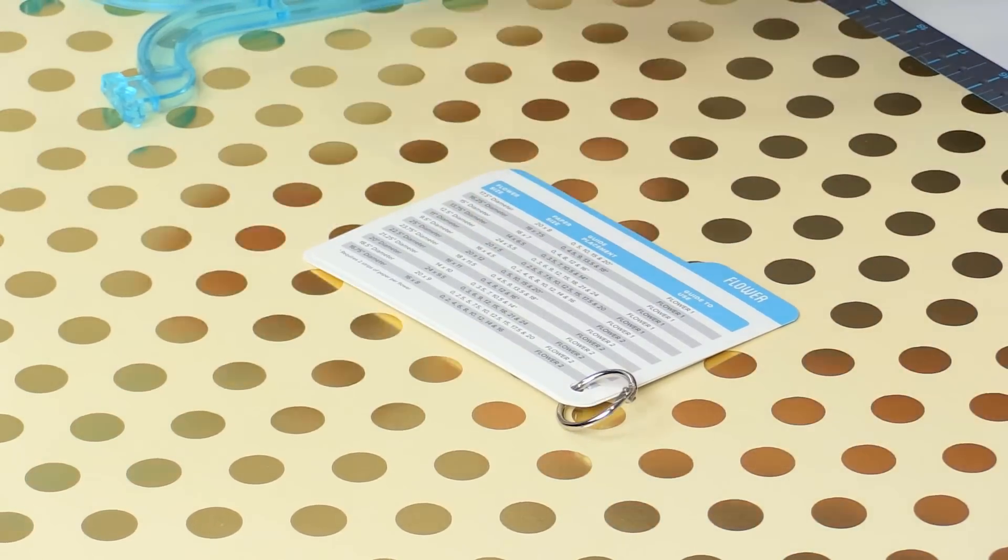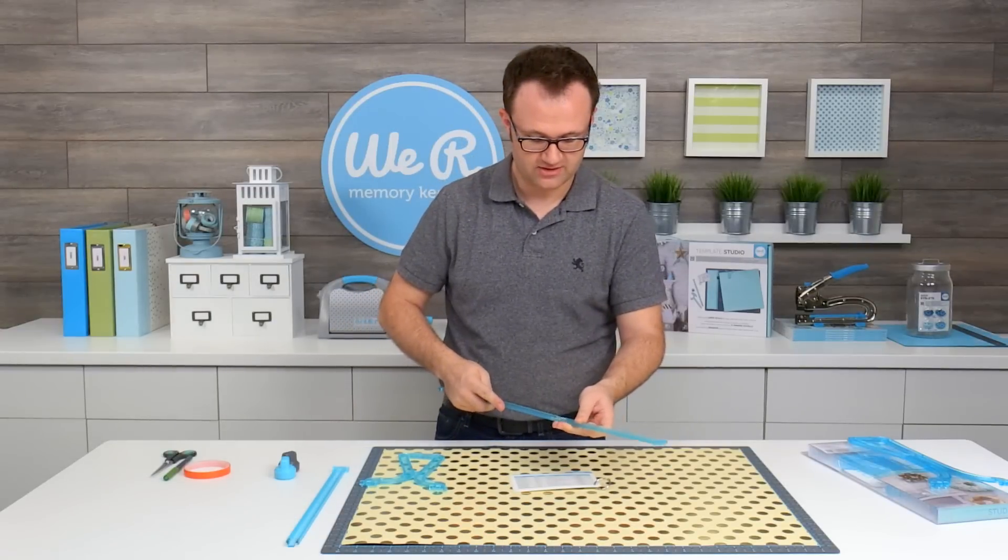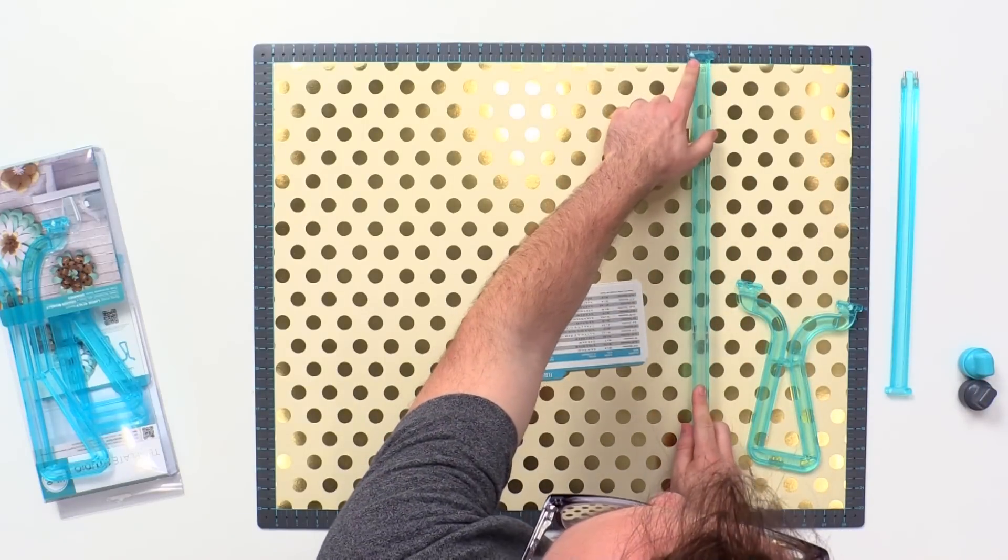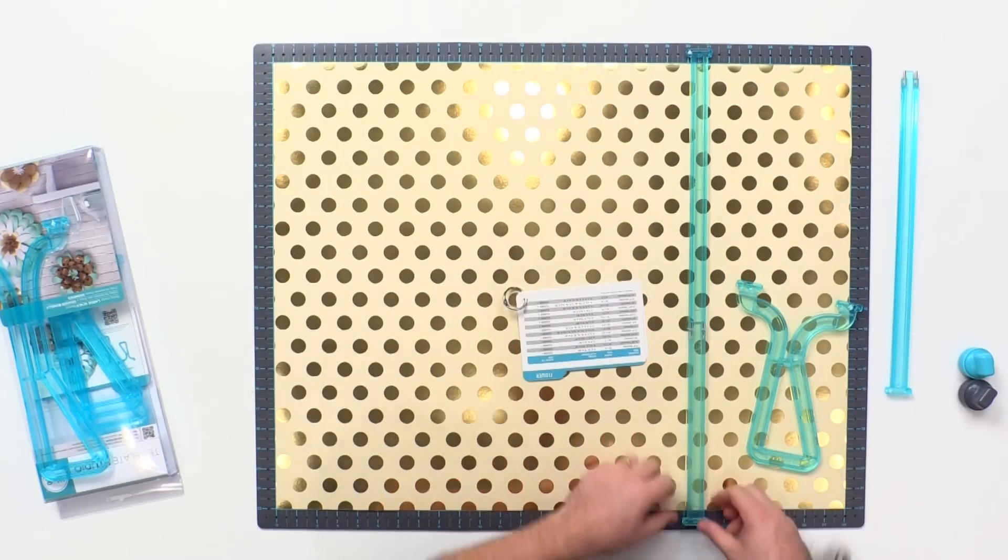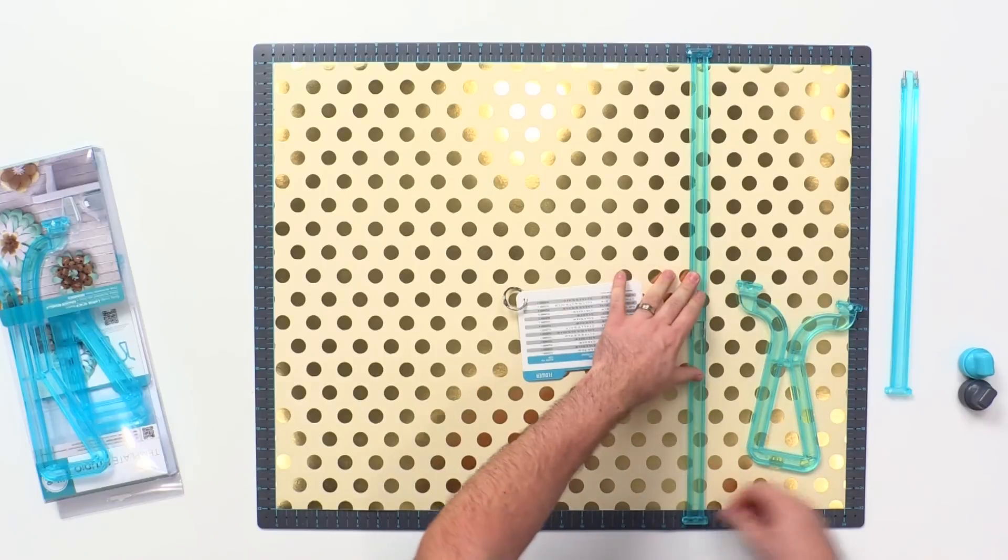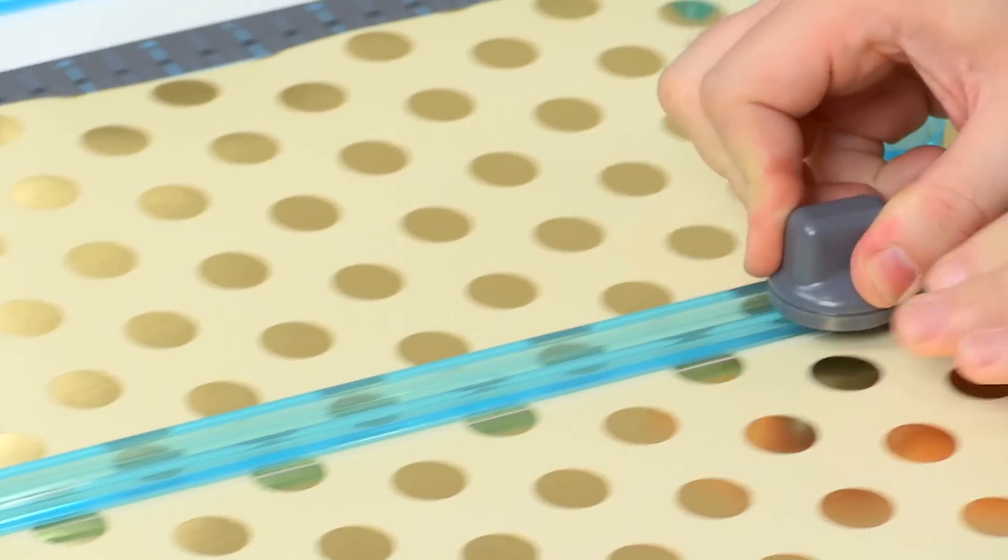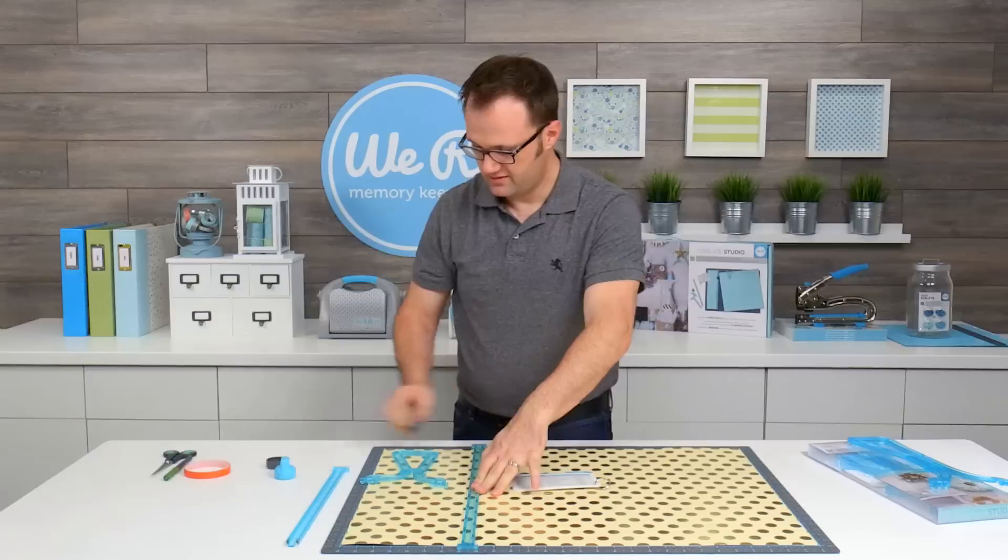To do that, I'm going to take my A and B Guides that come with my starter kit. I'm going to connect them together, and I'm aligning the arrow of these guides into 20 inches. Taking my gray cutting blade, I'm just going to cut along my guide.